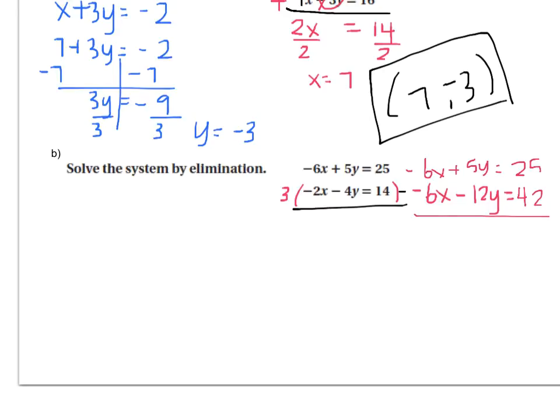If I subtract them, then the x's will cancel because negative six take away negative six gives me zero. So the goal is to make something cancel. And if you have to multiply, then do that. So negative six take away negative six is zero. Five take away negative twelve—I have to think about integers. Five take away negative twelve is the same as five plus positive twelve, so that gives me seventeen y. And twenty-five take away forty-two is the same as twenty-five plus negative forty-two, which would be negative seventeen.